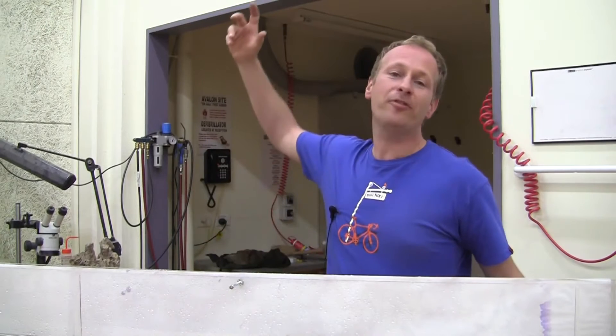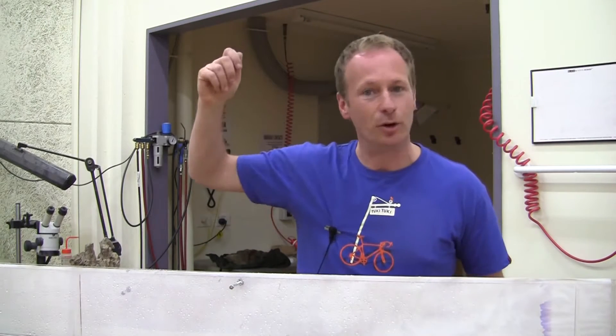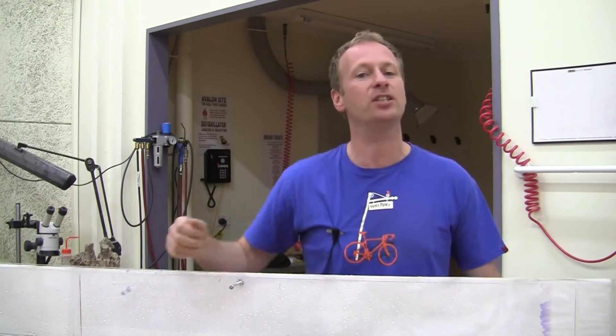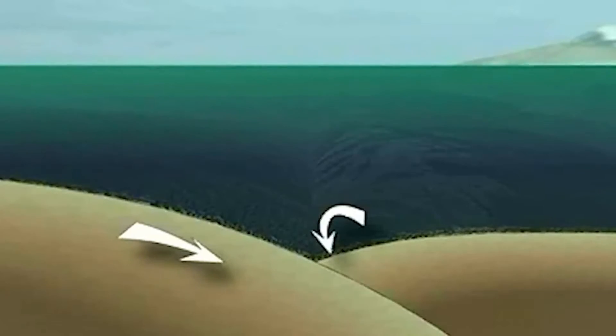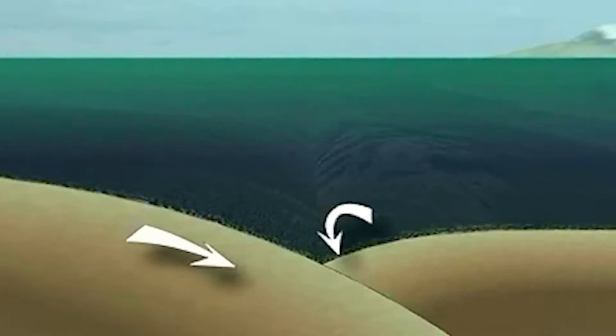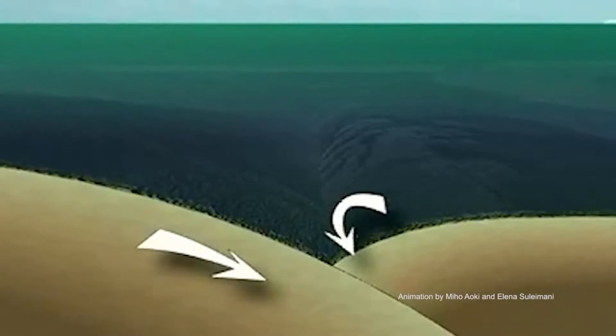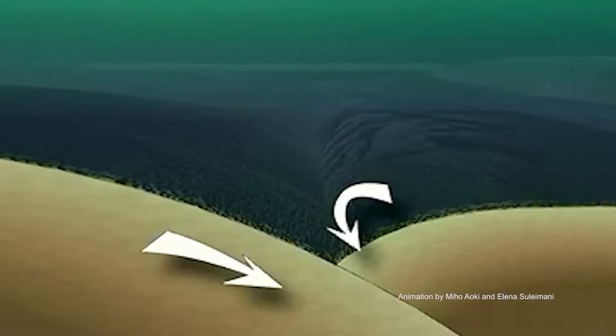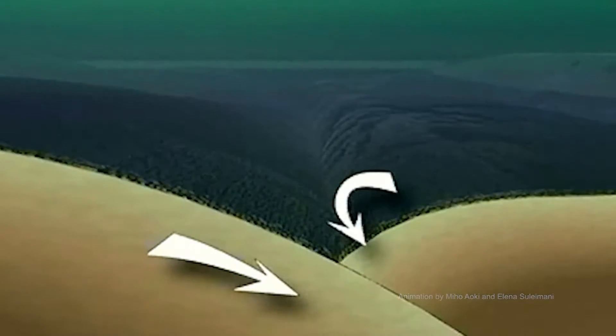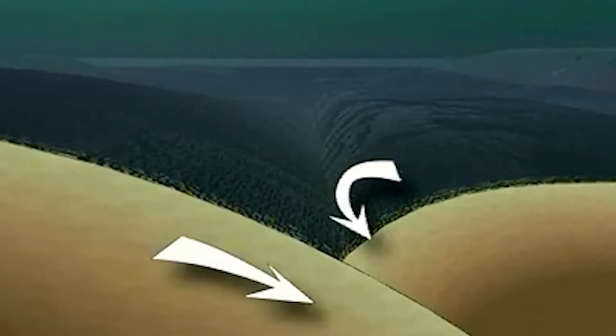A tsunami can occur from an earthquake, from a volcanic eruption, from a landslide, or even from a meteor crashing into the ocean from outer space. In most cases the tsunami is created by the sea floor displacing the water from underneath.